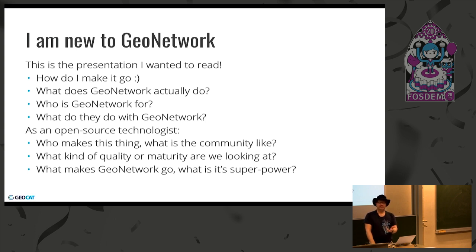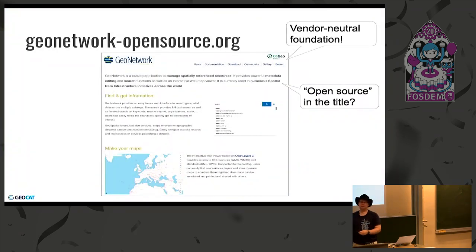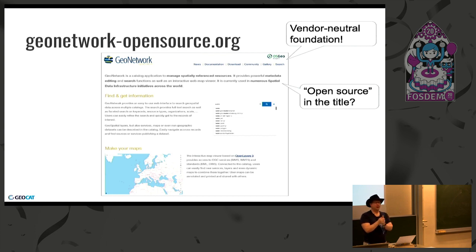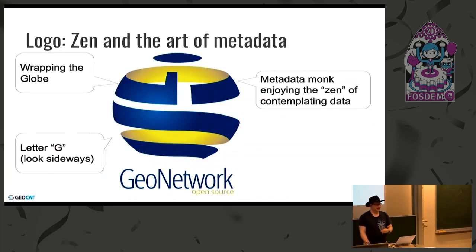Or can I rewrite it in Python in an afternoon? Those kinds of questions. First impression: it's got OSGEO in the corner, so that's good — vendor neutral foundation. Here's something that weirds me out: it says open source in the title. That's usually a sign that something's really old and open source is a feature, or it's a sign that it's really commercial and this is the open source teaser, and they're going to try and withhold functionality later. So I'm like, open source in the title — something's wrong here.